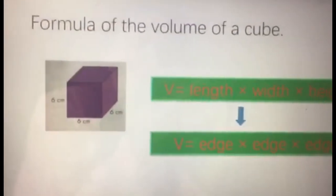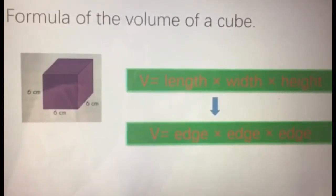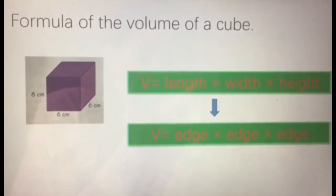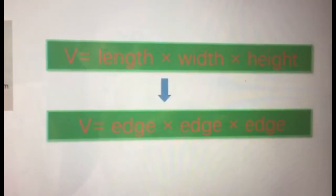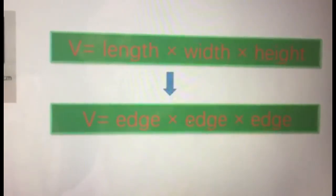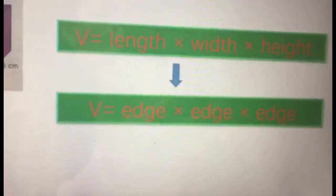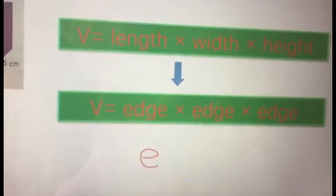For a cube it's the same thing, except that length and width and height are the same thing, which is edge in a cube. So instead of writing length times height times width, you write edge times edge times edge. What you can write is e times e times e.